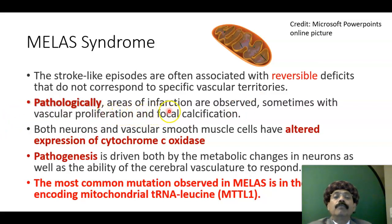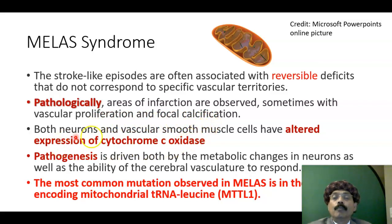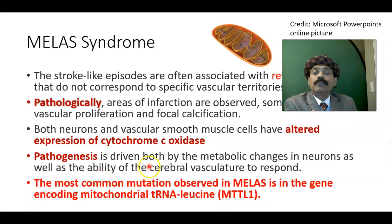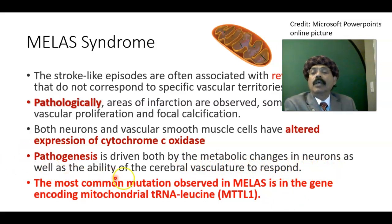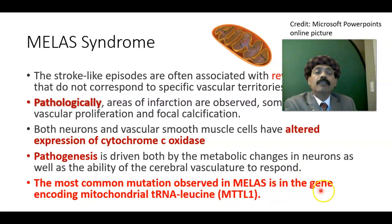Pathologically, areas of infarction are observed, sometimes with vascular proliferation and focal calcification. Both neurons and vascular smooth muscle cells have altered expression of cytochrome C oxidase. Pathogenesis is driven by metabolic changes in neurons as well as impaired response of the cerebral vasculature. The most common mutation in MELAS is in the gene encoding mitochondrial transfer RNA leucine, MTTL1.